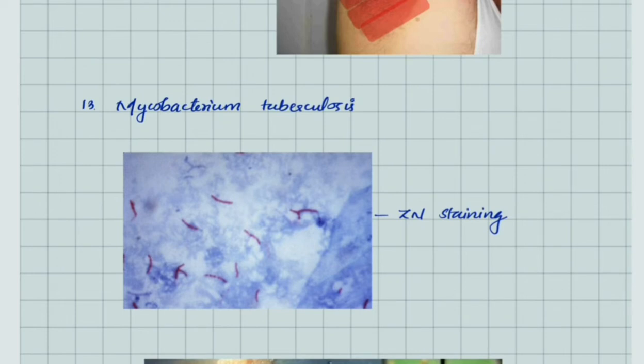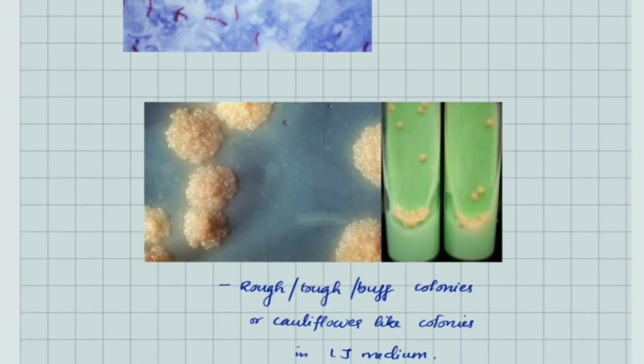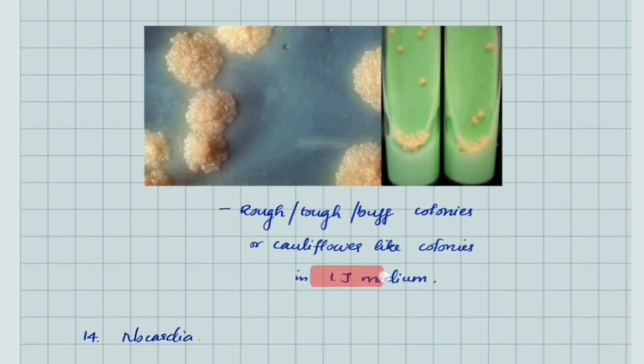Mycobacterium tuberculosis—this is Ziehl-Neelsen staining that shows acid-fast bacilli. In LJ medium we see rough, tough, buff colonies of tuberculosis or cauliflower-like colonies.